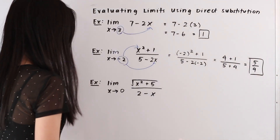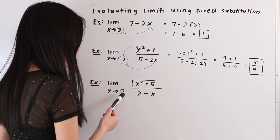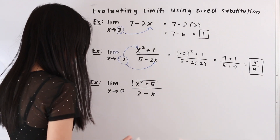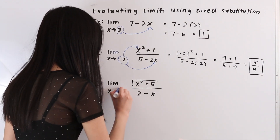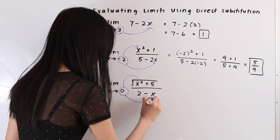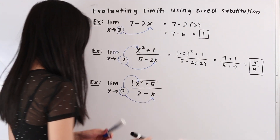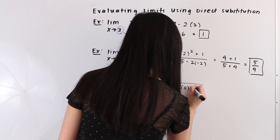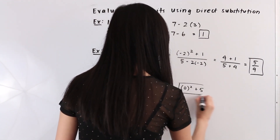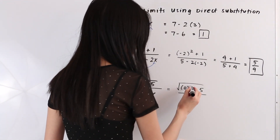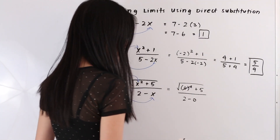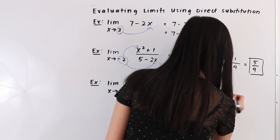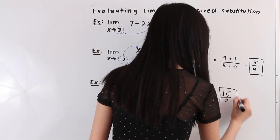Let's take a look at this last example. We have the limit as x approaches 0 of the function the square root of x squared plus 5 over 2 minus x. Let's take this 0 and plug it in for x. Doing that we have the square root of 0 squared plus 5 over 2 minus 0. The 0 squared is equal to 0 and the 0 cancels out as well, giving us the square root of 5 over 2. This is our final answer.